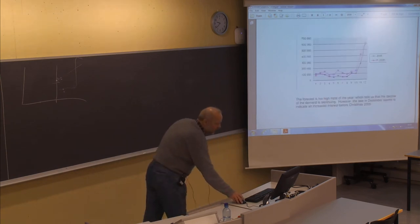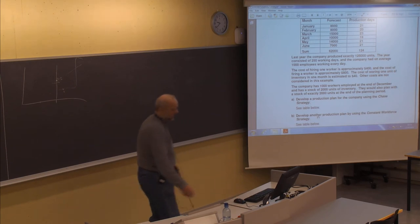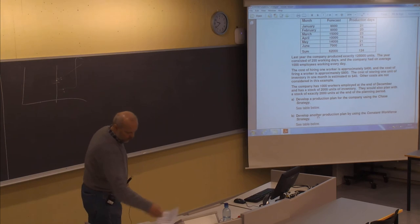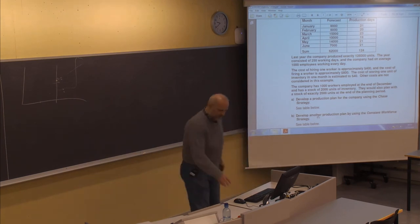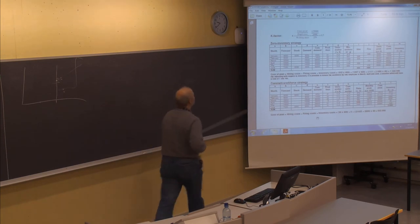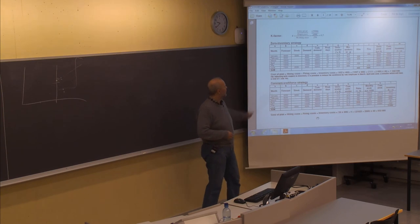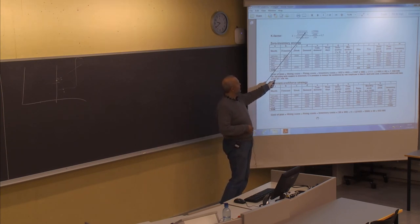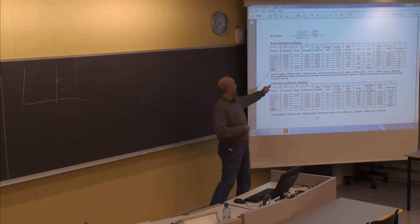Then we jump to problem two about aggregate planning. First, we create a production plan using the Chase strategy — also called the Zero Inventory strategy — and then another using the Constant Workforce strategy. The first thing to do is find the K factor using historical data: the number of units produced was 125,000, the average number of employees was 1,000, and the number of working days was 250, giving a K factor of 0.5. One worker will produce half an item per day on average.